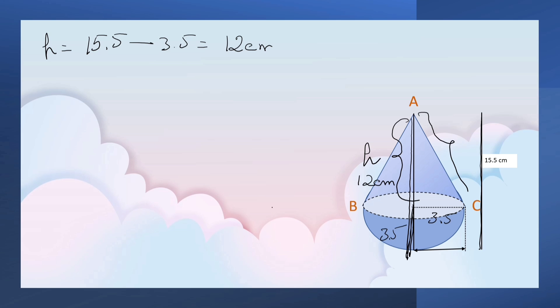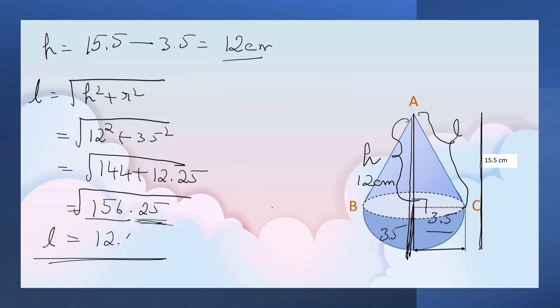But we have to find out slant height, that is L, to find out the curved surface area of the cone. By looking at the figure, we can say that we can use Pythagorean theorem to find it. So L equals square root of h² plus r². Here, h is 12 cm, r is 3.5 cm. 12 square is 144, 3.5 square is 12.25. That equals 156.25. So L is equal to 12.5 cm.